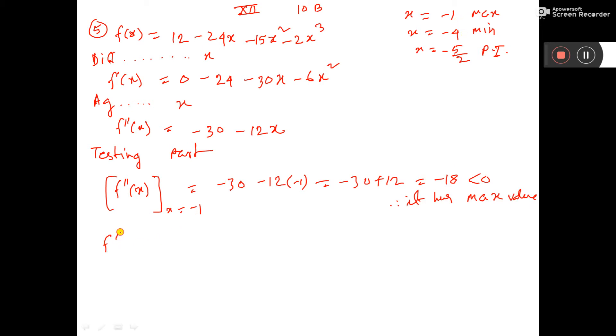Now, again test f''(x) at the point x equal to -4. So, that is equal to -30 - 12(-4), that is equal to -30 + 48, that is equal to 18, greater than 0, therefore it has minimum value.